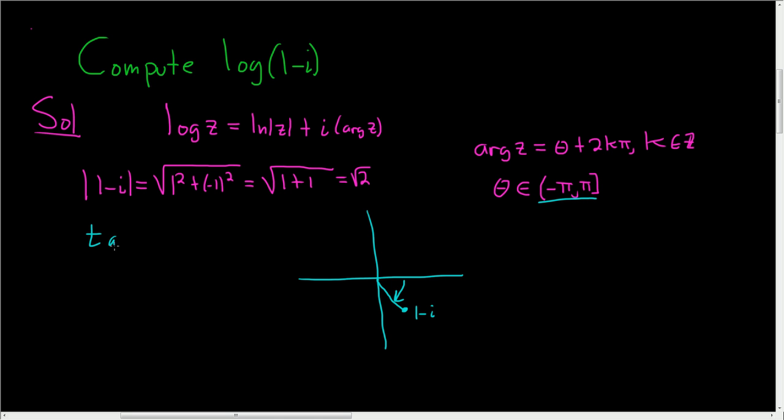Well, we know that the tangent of theta is equal to y over x. So in this case, y is negative 1, and x is 1. So we end up with negative 1. So this means that theta is equal to negative pi over 4.